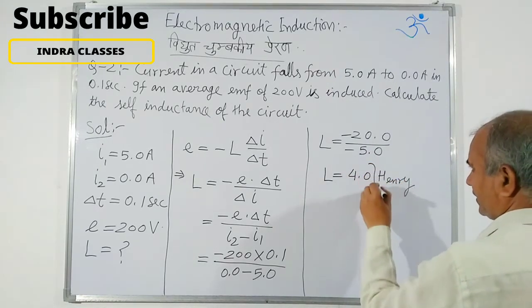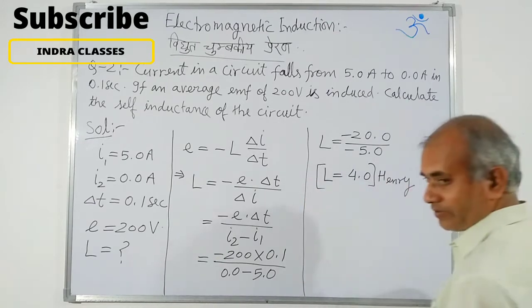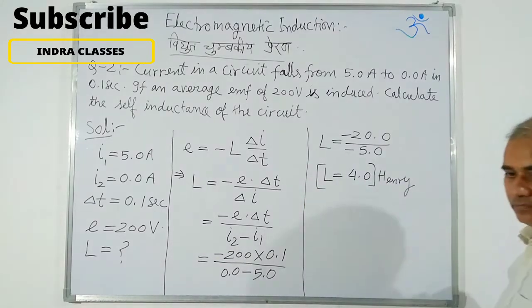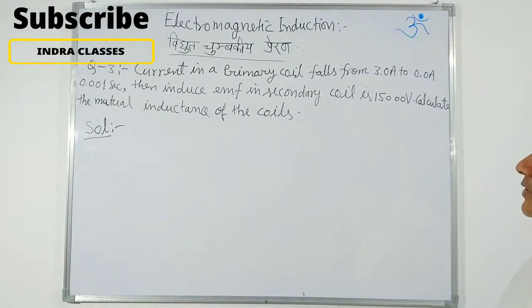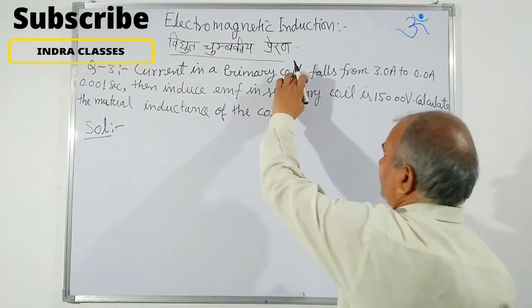So L = 4.0 Henry. That is the value of L. Now let us move to the next question.